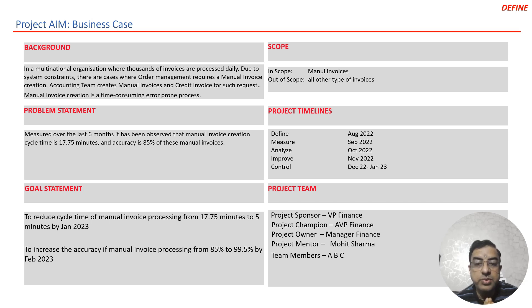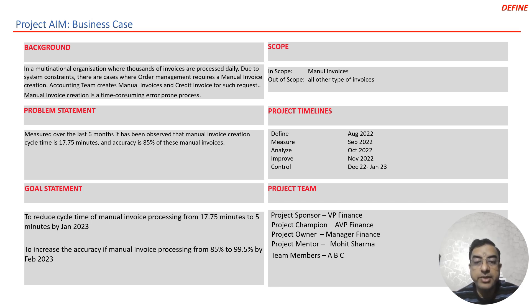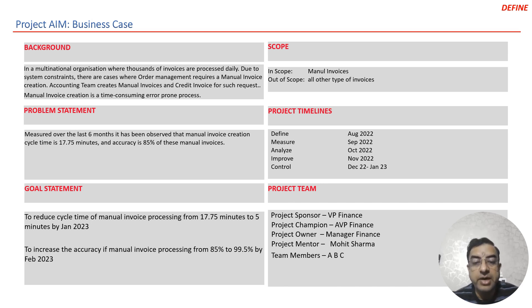For some viewers who are watching this video for the first time, there are six elements of a project charter: the first one is the background of the business, which is the business case; then you have to write down the problem statement, the goal statement, the scope of the project, the project timelines, and the project team. Because this was a cross-functional project, a cross-functional team was created with people from different departments included as team members.